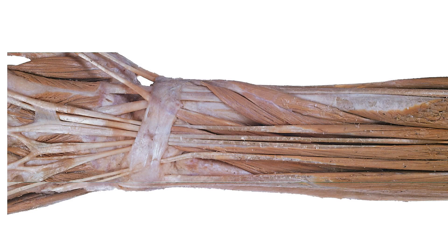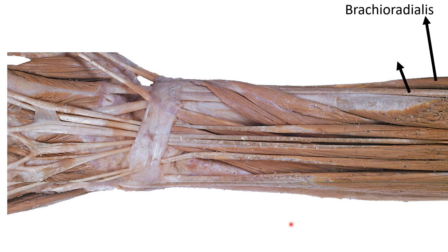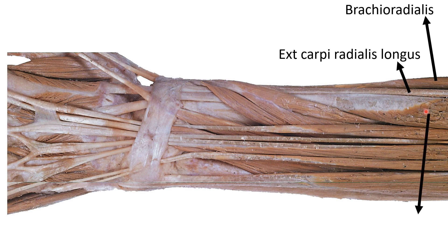Now moving to the extensor compartment of the forearm. These muscles are also arranged in two layers: superficial and deep. In the superficial extensor compartment, this is the lateral aspect and this is the medial aspect. The first and foremost muscle we can identify is brachioradialis. Medial to that we can identify the long tendon called extensor carpi radialis longus. Then medial to that we can identify extensor carpi radialis brevis.